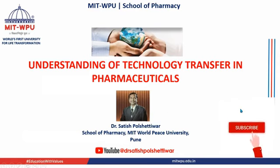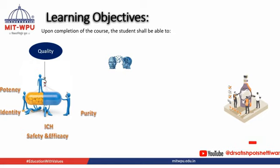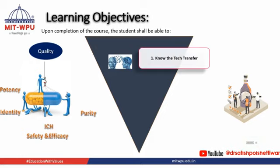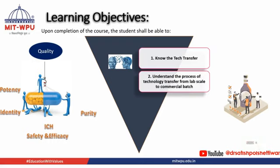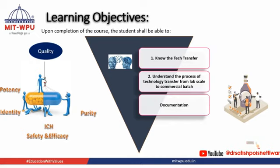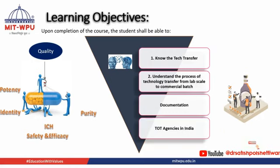Let us begin with this topic. What is the learning objective of this technology transfer? Upon completion of this topic, you will be able to learn about what is technology transfer and how it is applicable to the pharma industry. Then we will understand the process of technology transfer from lab scale to the commercial batch, that is the commercial level. Then we will understand what are the different recommendations required, which is one of the critical aspects in technology transfer. Then we will discuss about technology transfer in India and the technology transfer agencies in India — there are different agencies — and we will discuss them in detail.